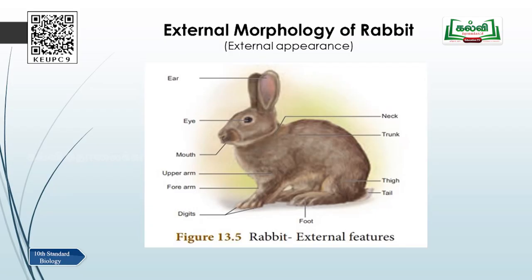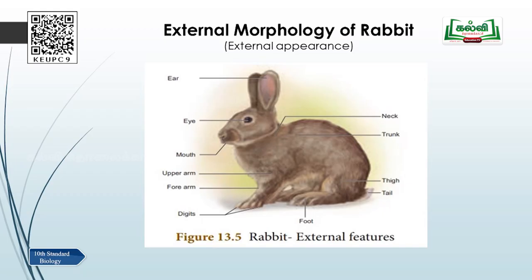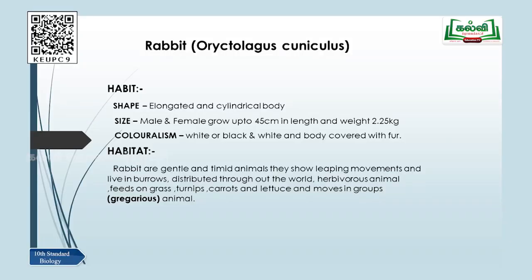Now let us understand the external morphology of rabbit. External morphology means the external appearance. Most of you — I think all of you — have seen a rabbit. The picture of a rabbit is being displayed on screen, same as in your textbook Figure 13.5. On top you see the ears, below that the eyes, mouth, nostril above the mouth, upper arm, forearm, limbs, digits, foot, tail, thigh, trunk, and the neck.